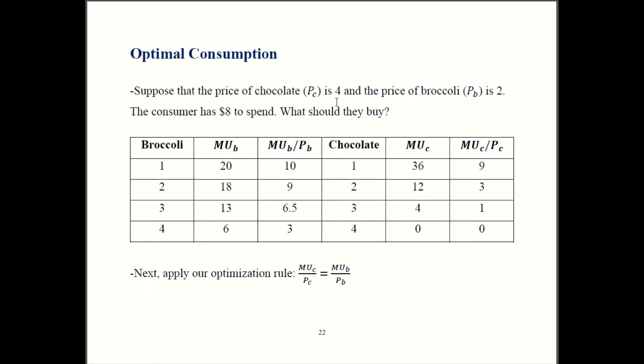Now for chocolate the price is $4. So I divide 36 by 4 and that gives me 9. Similarly, 12 divided by 4 is 3, 4 divided by 4 is 1, and 0 over 4 is 0.